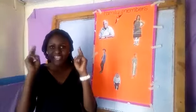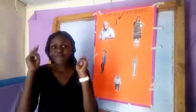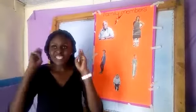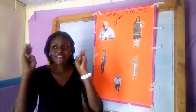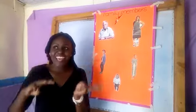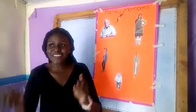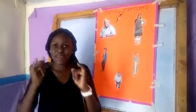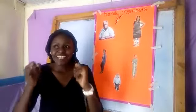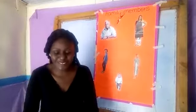Brother Finger, Brother Finger, where are you? Here I am, here I am, and how do you do? Sister Finger, Sister Finger, where are you? Here I am, here I am, and how do you do? Baby Finger, Baby Finger, where are you? Here I am, here I am, and how do you do?